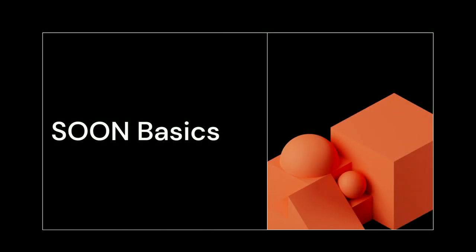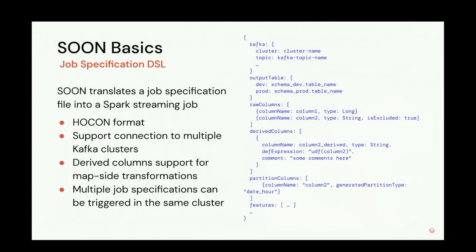In a nutshell, what Swoom does is translate a job specification file — visible on the right-hand side of the screen — into a Spark Streaming job and submit it to the Spark cluster. There are two scenarios: append-only and merge. For append-only, it translates the file into the Two-Table API so it knows how to read data from Kafka, generate a DataFrame, create files for that DataFrame, and append them to the Delta table on S3.